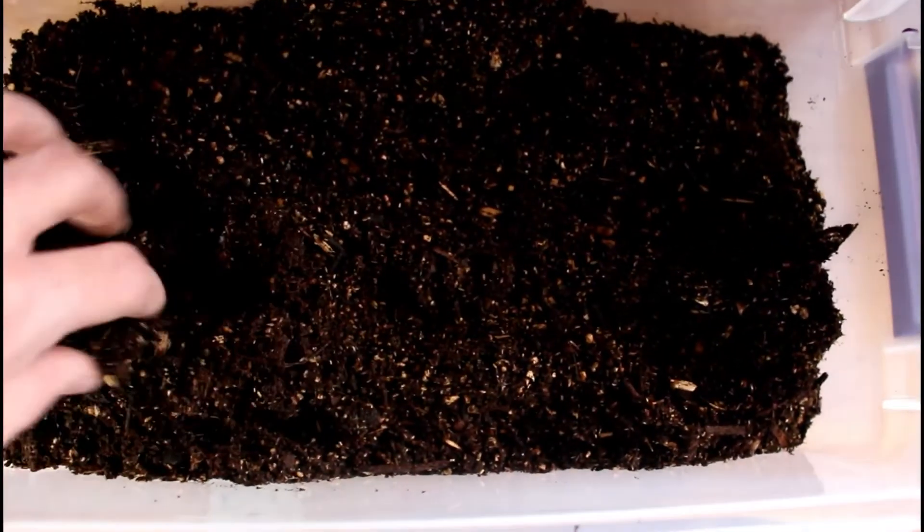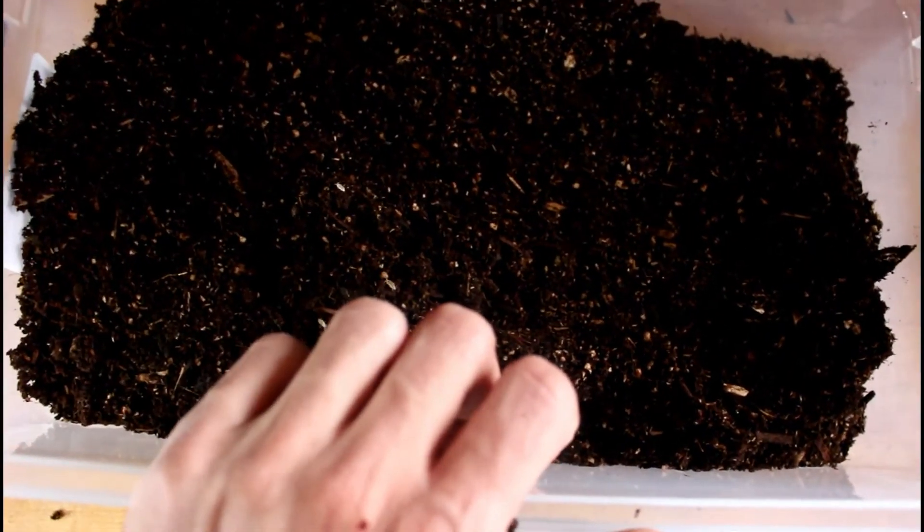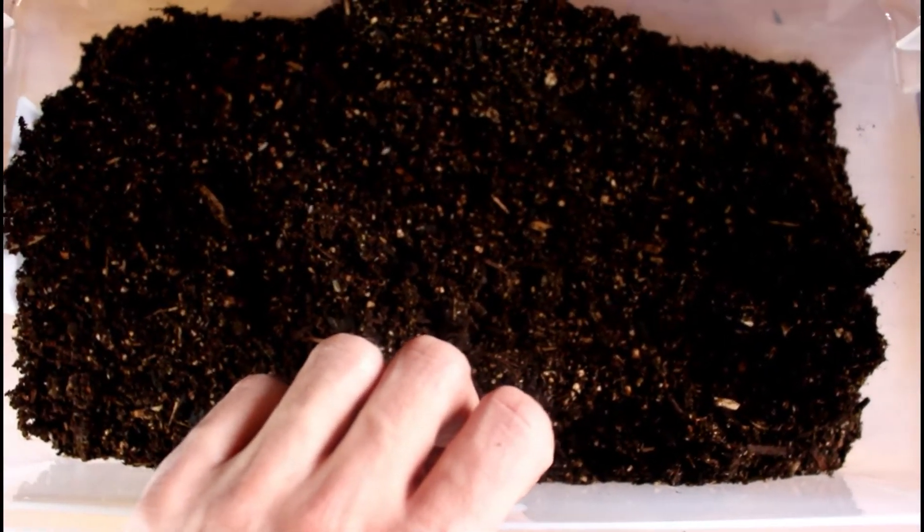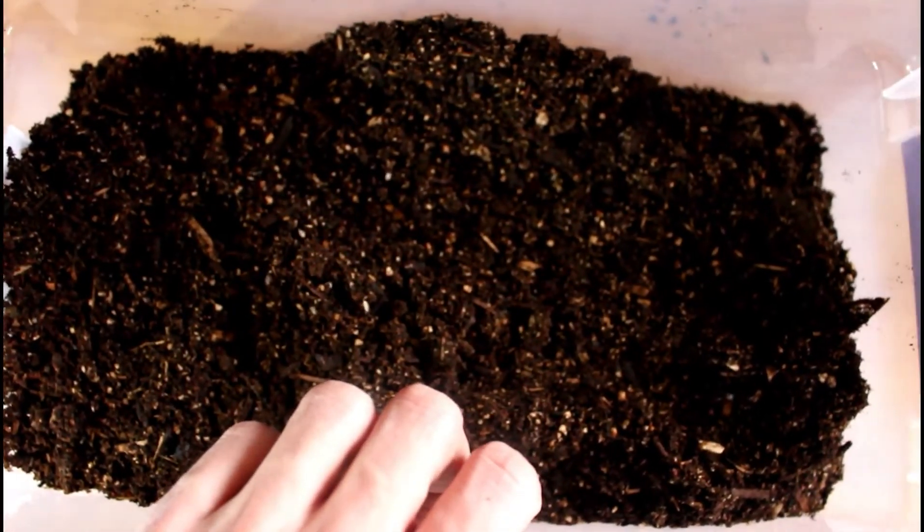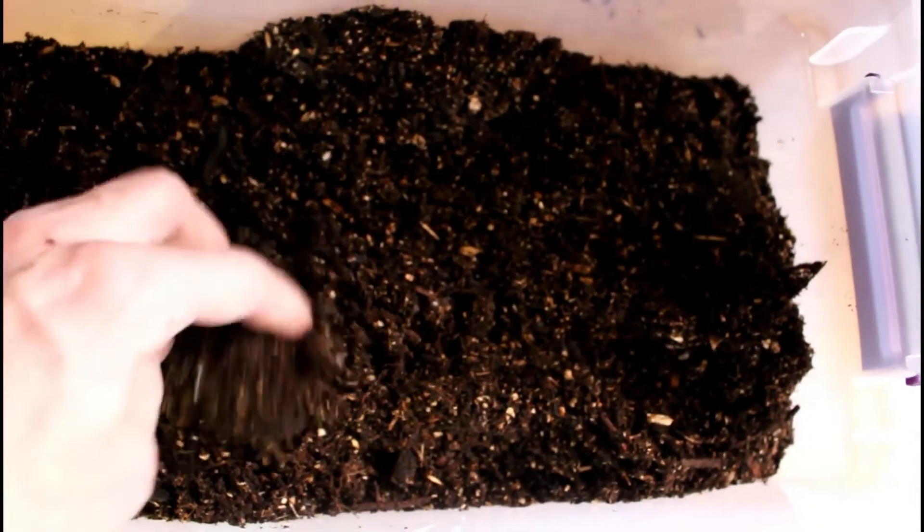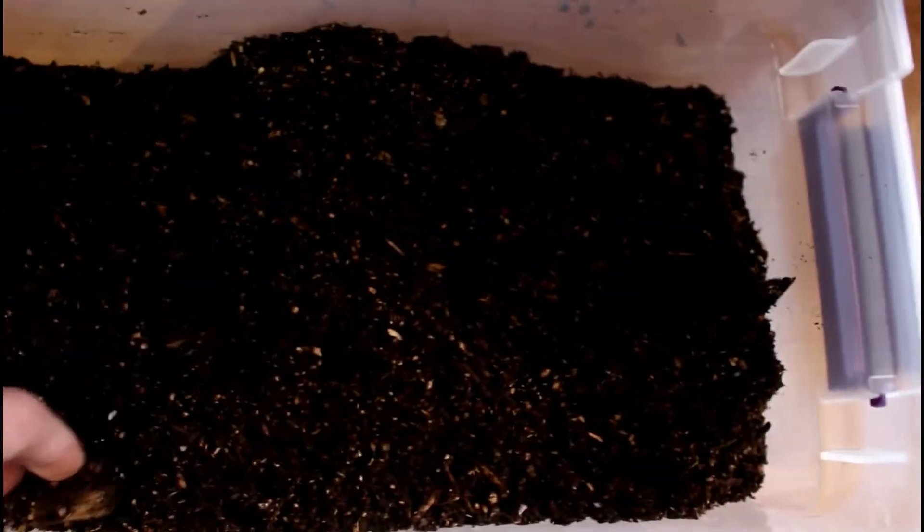Next what we're going to do is we're going to put some leaves in here. You can use leaves, you can use cork bark, you can use normal bark that you can find outside, sticks, cardboard, anything that decays and is somewhat a woody, pulpy material.